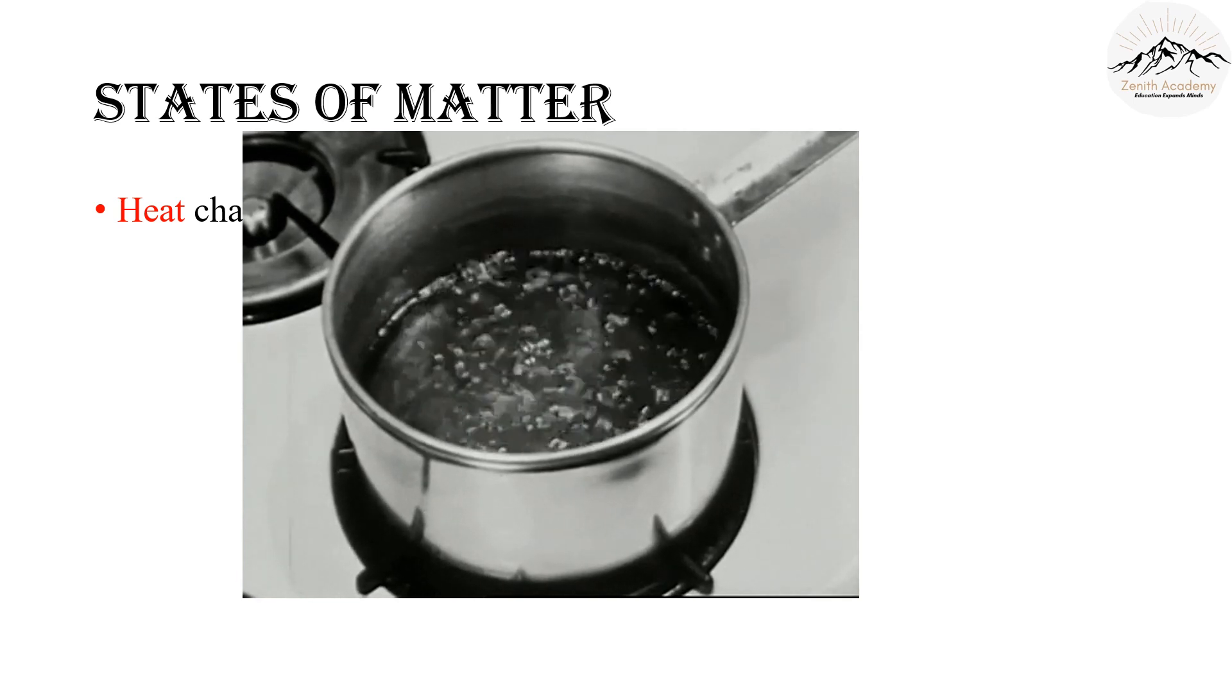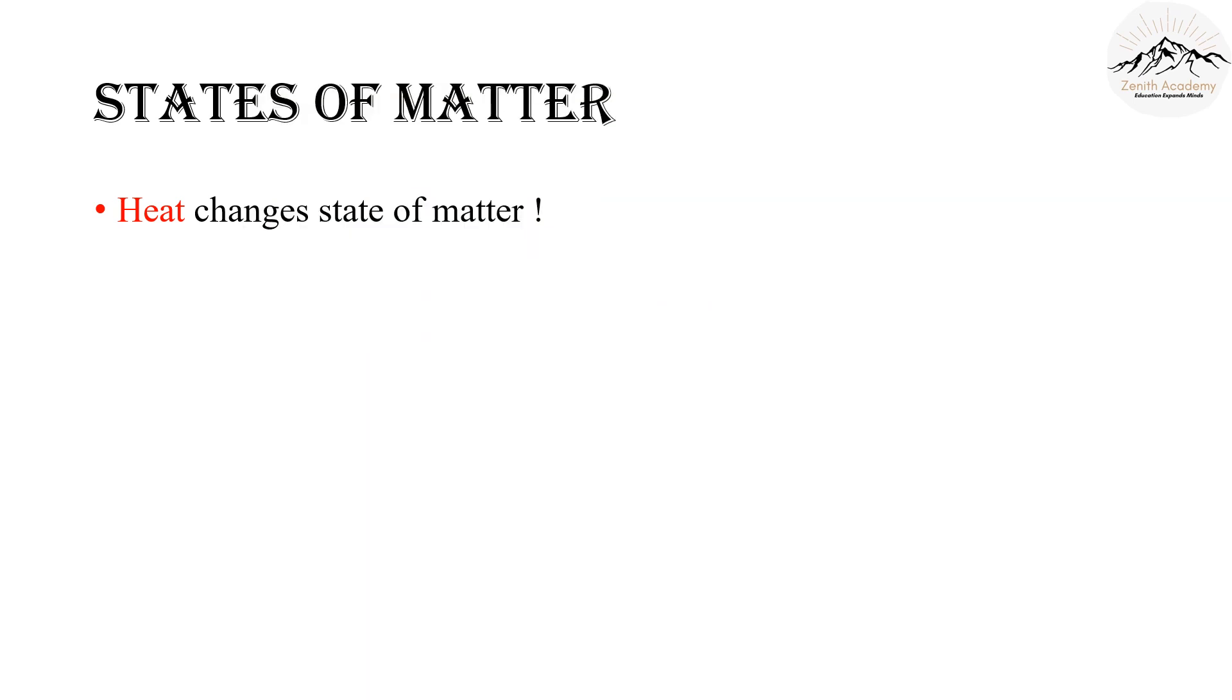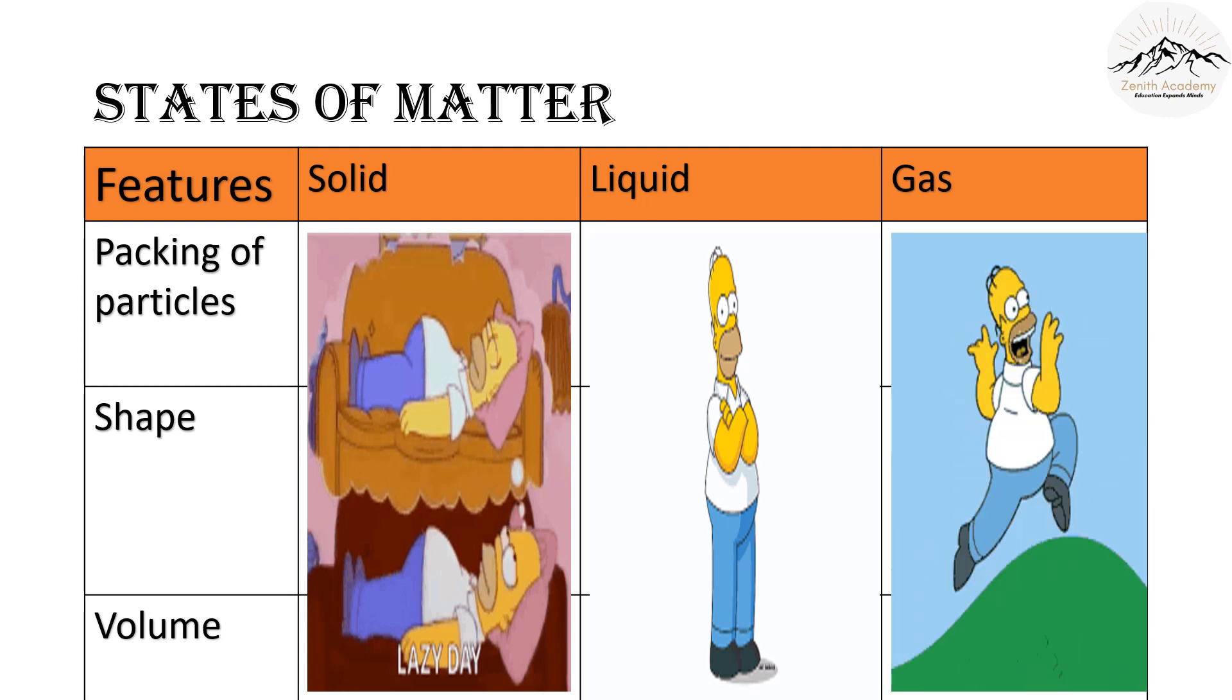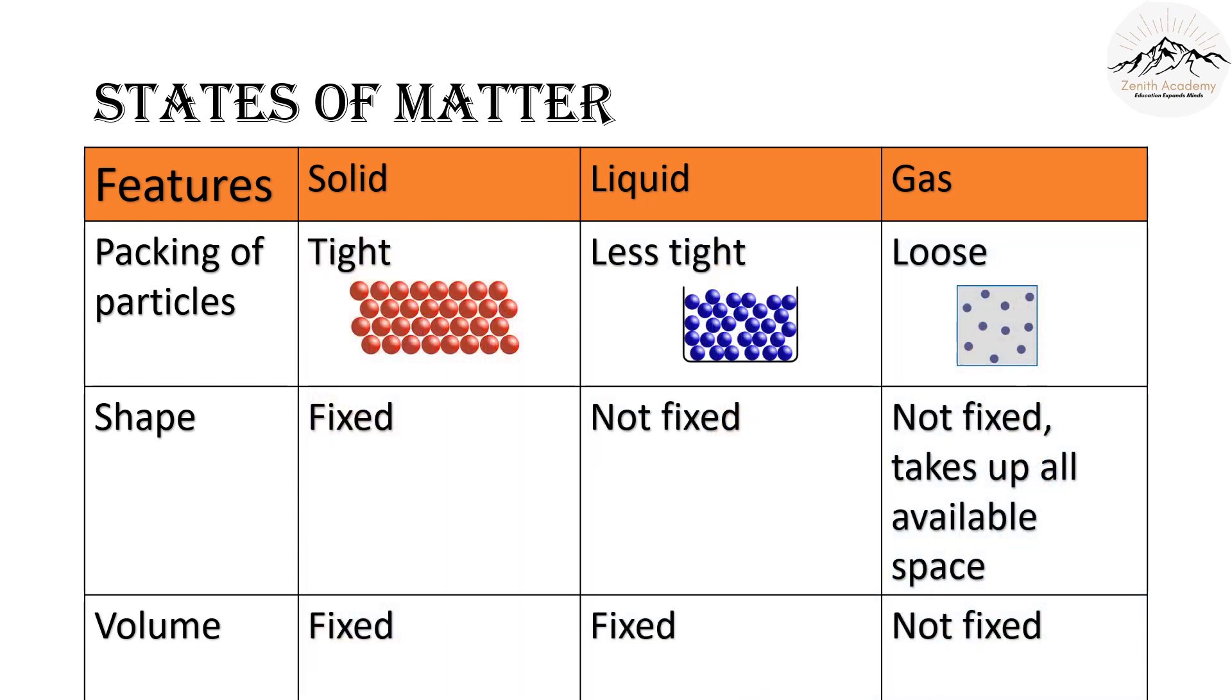Let's learn about the states of matter now. The three states of matter that we know are solid, liquid and gas. Now I want you to think of these states as your friends. Solid is a very lazy friend who does not like to move. Gas, on the other hand, is very energetic. Gas likes to move all the time. And liquid is neither very lazy nor very energetic. Now let's differentiate between them.